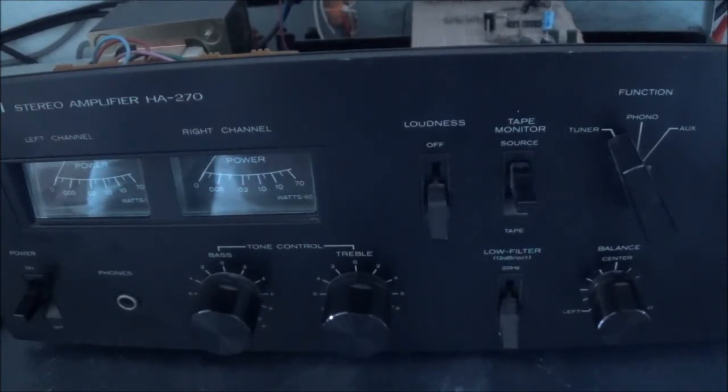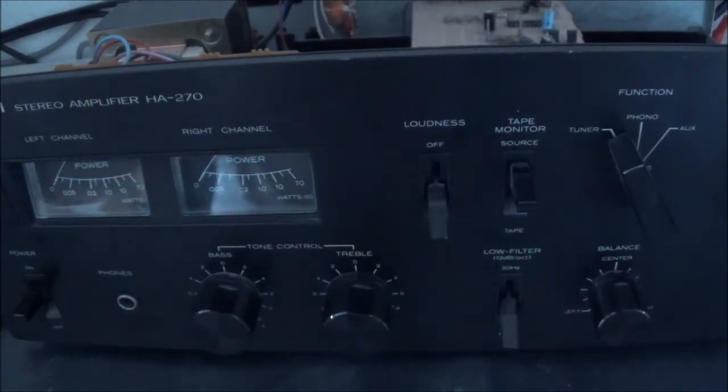So the first thing I'm going to do, I have a variable isolation transformer hooked up now which is actually the proper way to do things and then I'm going to go ahead and slowly turn up the line voltage and see what happens, monitor everything, see if it's not drawing too much current. My isolation transformer you can actually see how much current is being drawn. So let me go ahead and turn this thing on.